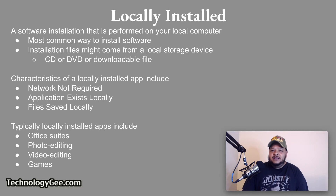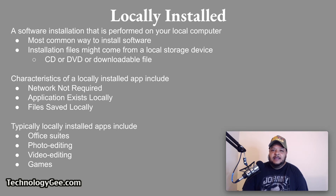The characteristics of a locally installed app include the following. Network is not required — after the initial install, the application does not need network access, though many apps prefer network access to validate a product key or license key. The next characteristic is applications exist locally: the application files are stored on a drive connected to the computer. Typically, applications are stored on the system drive — the hard drive or solid state drive built into the computer.